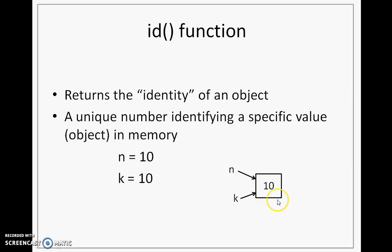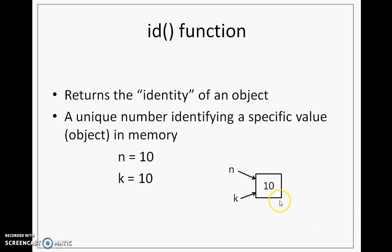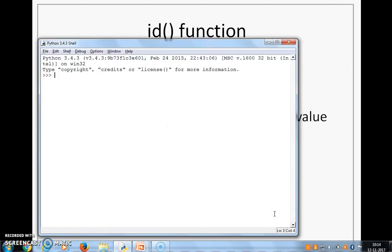Here you see there is a specific value created. The value stored is 10, and there are two variables referring to it: n and k. This is due to writing in Python n equal to 10, followed by k equal to 10. Understand that 10 will not be created twice in memory — it will be created only once, and both n and k will be referring to the same memory area. How am I so sure about this? Because this memory area will also get an identity, a unique number specifying it. Let's go to Python shell and study this.